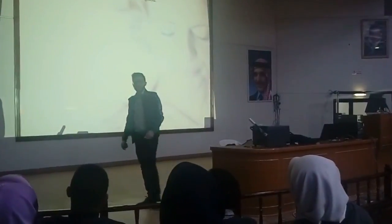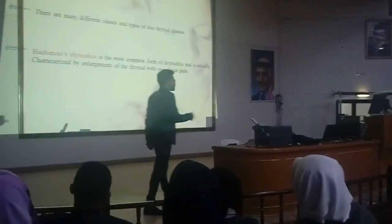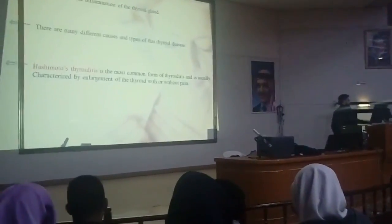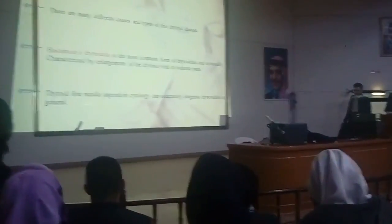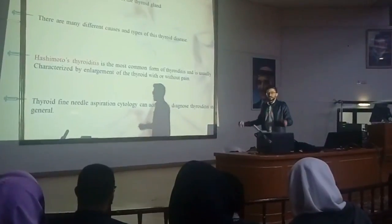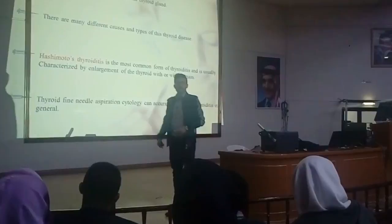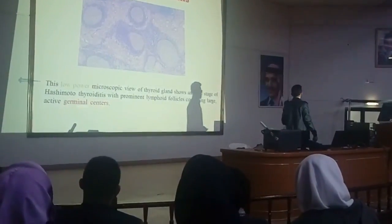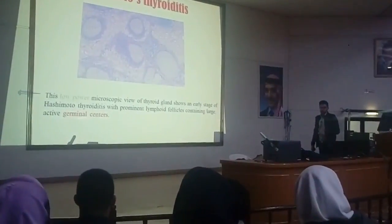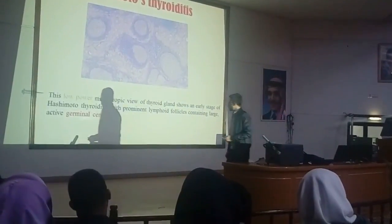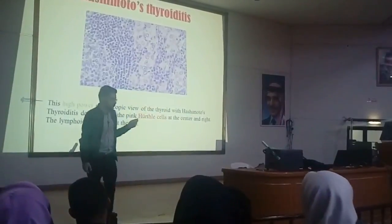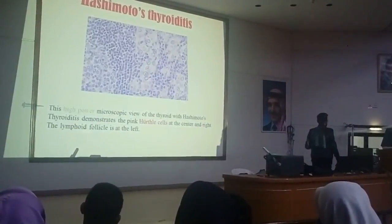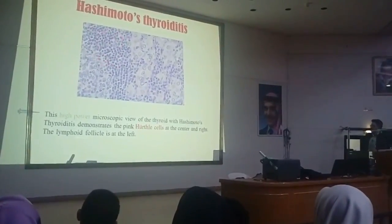Starting with thyroiditis. Thyroiditis, from its name, is an inflammation of the thyroid gland. We actually have many types and causes of thyroiditis. The most common type is Hashimoto's thyroiditis, and that's why I've chosen this type to talk about. Thyroiditis in general includes enlargement of the thyroid gland. It was proven that most types of thyroiditis can be diagnosed by finding a germinal center. I've included two images for Hashimoto's thyroiditis. The first image is a low-power microscopic image — you can see a lymphoid follicle, and in the center of this lymphoid follicle is an active germinal center. The second image is a high-power microscopic image of Hashimoto's thyroiditis. In the center and to the right of the image you can see Hürthle cells, also called oxyphilic cells, and to the left of the image you can see lymphoid follicle cells.